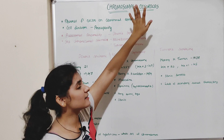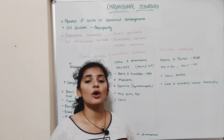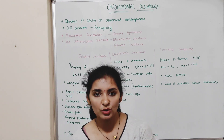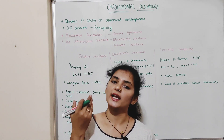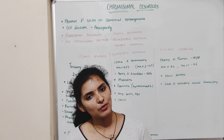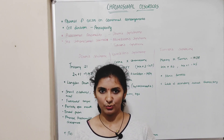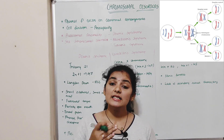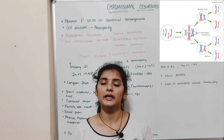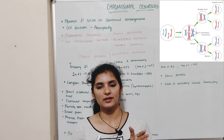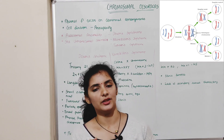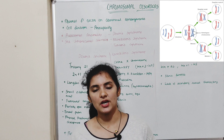As the name indicates, it is a disorder caused mainly due to absence of a chromosome, excess of a chromosome, or abnormal arrangement of one or more chromosomes. This gain or loss of chromosome mainly occurs during the cell division process, in particular during meiosis.